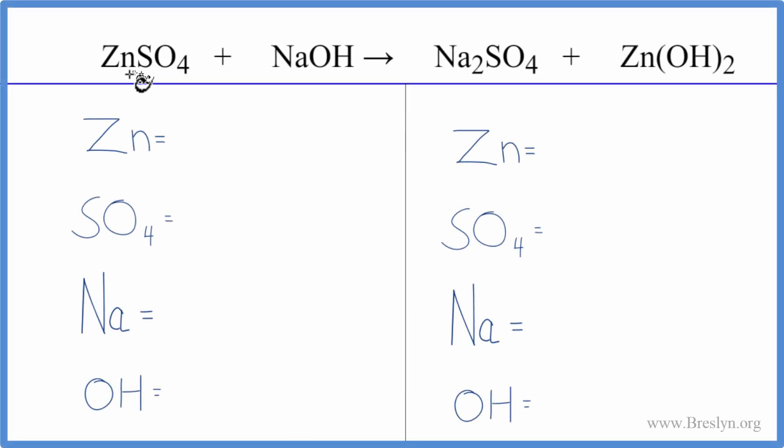All right, in this equation we have ZnSO4 plus NaOH, zinc sulfate plus sodium hydroxide. This is a double displacement reaction.